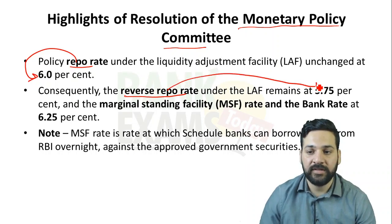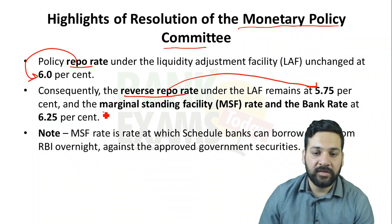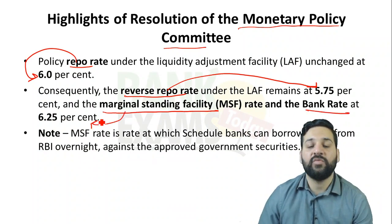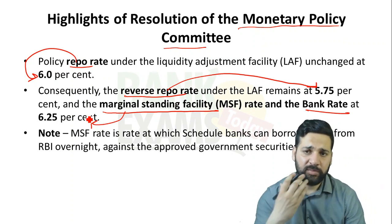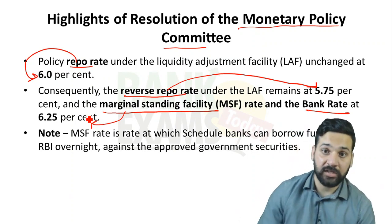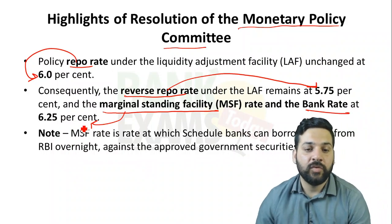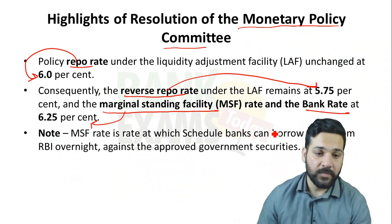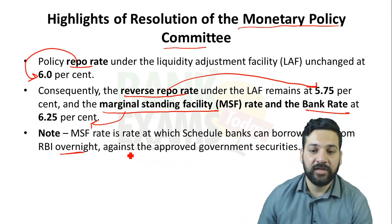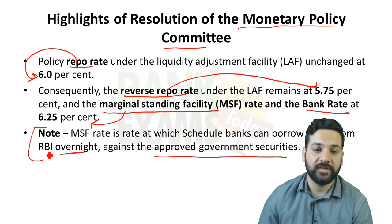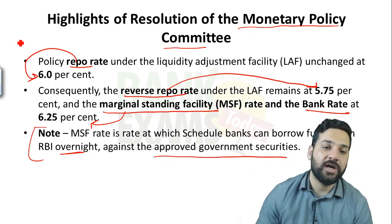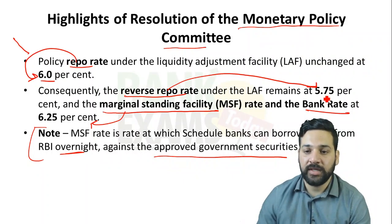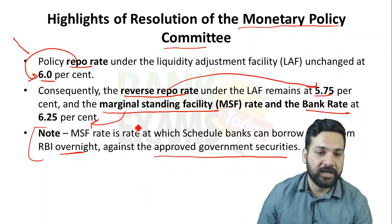The repo rate is still 6%, the reverse repo rate is still 5.75%. The Marginal Standing Facility (MSF) and the bank rate are still 6.25%. MSF is the rate at which scheduled banks can borrow funds from the RBI overnight against approved government securities. These rates have all been kept unchanged.